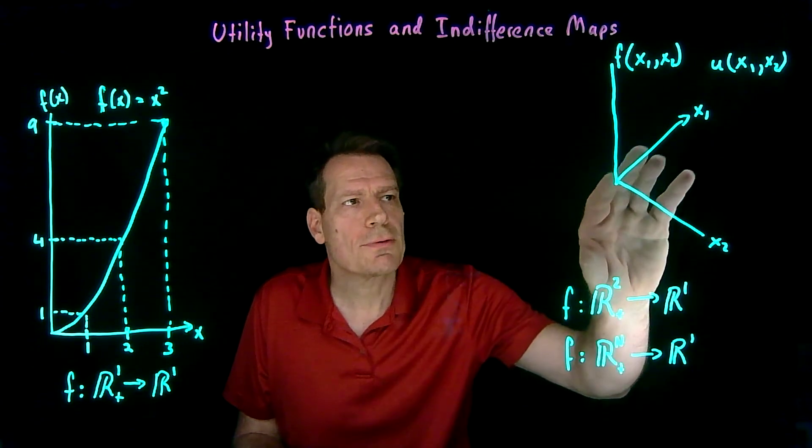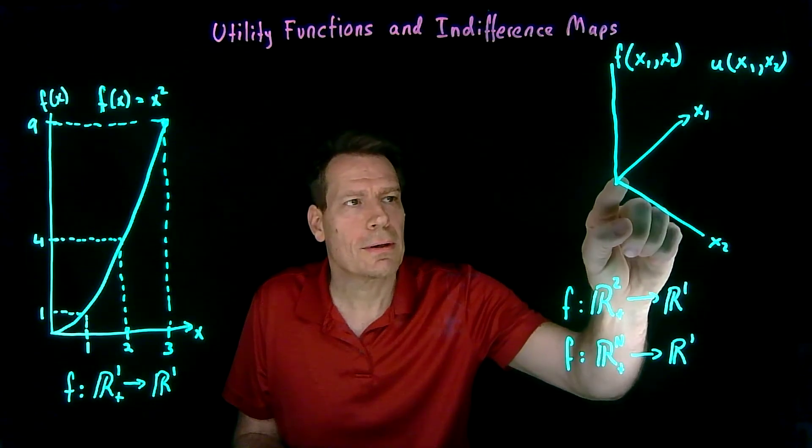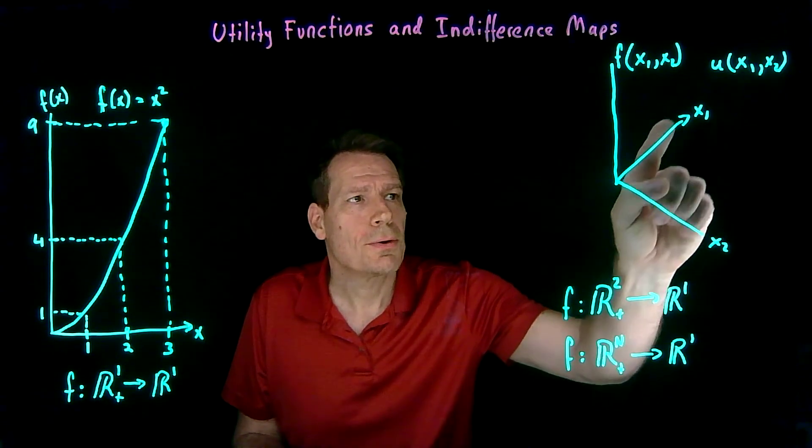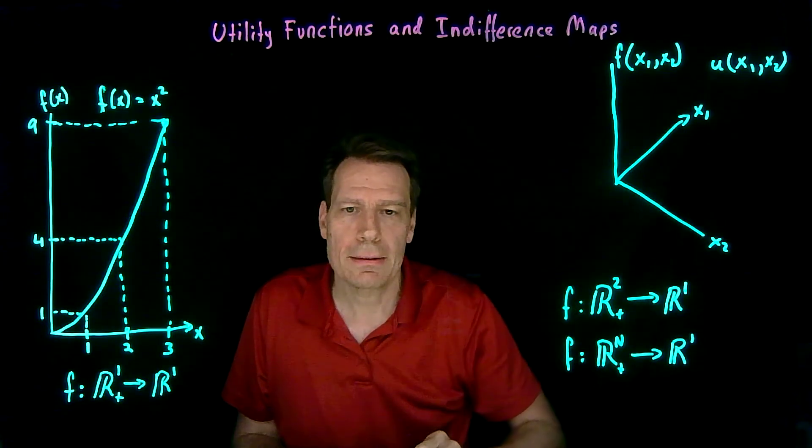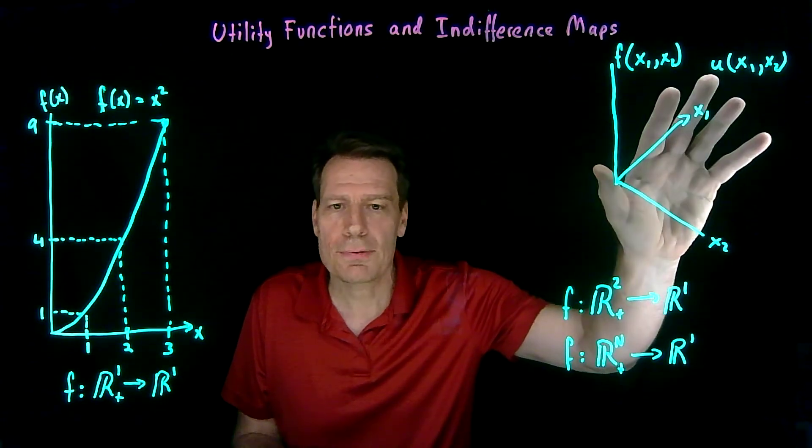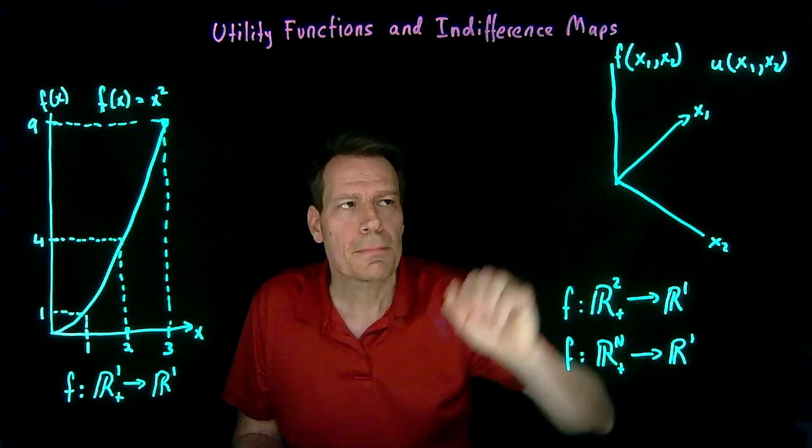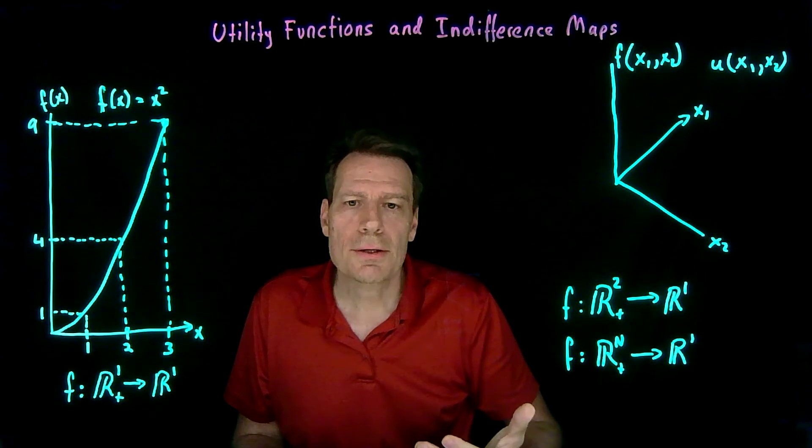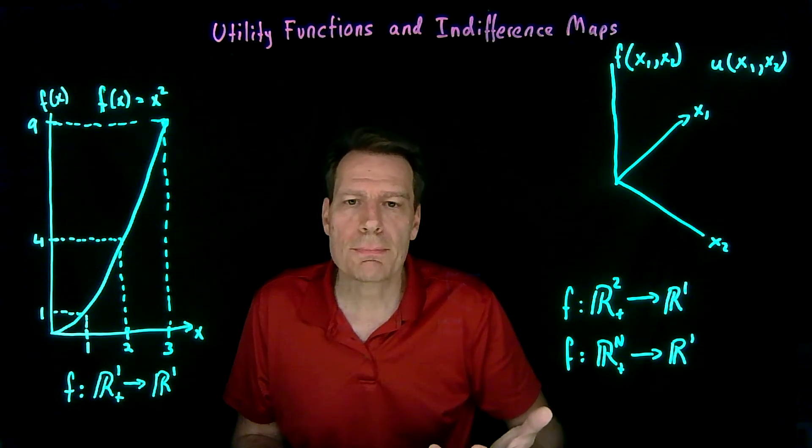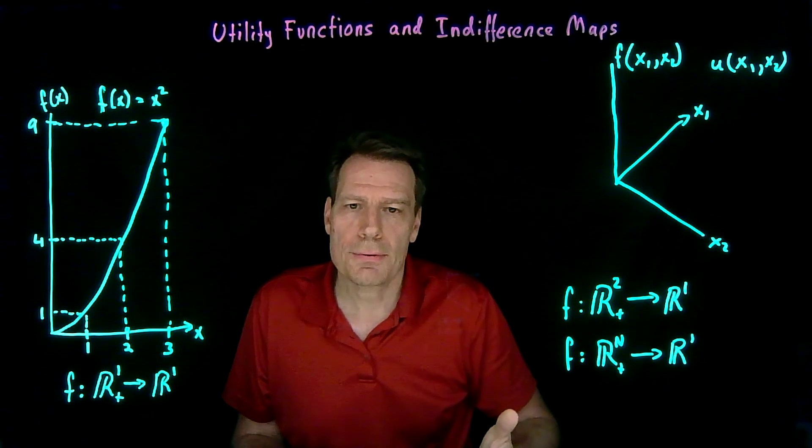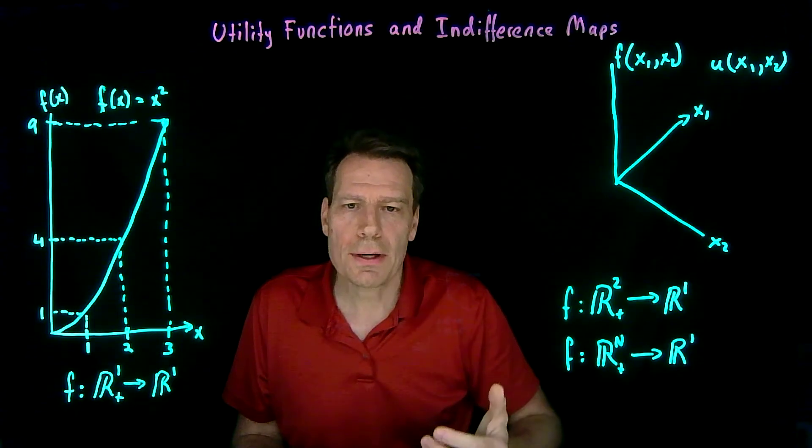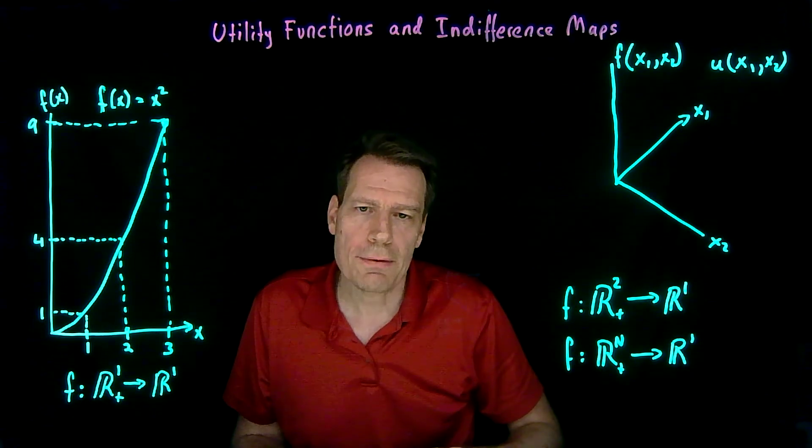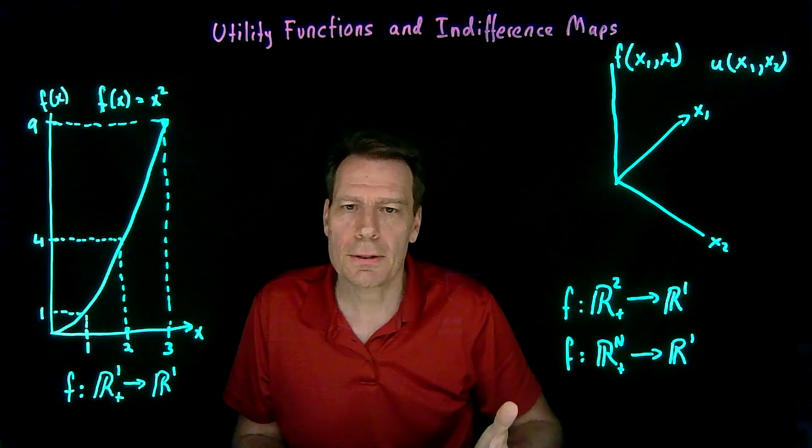Now, it's hard to picture what these functions look like when they assign numbers to points that lie in a plane, because that function lies in three-dimensional space. So what I've done is created a little animation that shows you what a utility function might look like, and that illustrates how that utility function relates to these indifference maps that we've been graphing. So let's take a look at that.